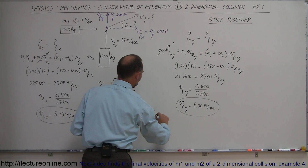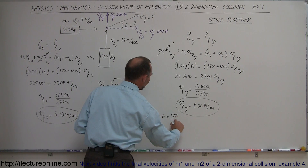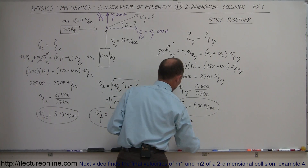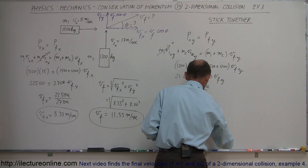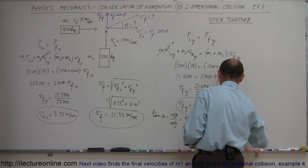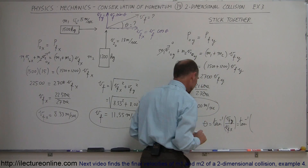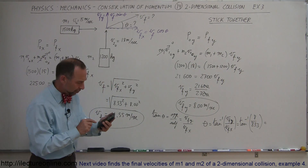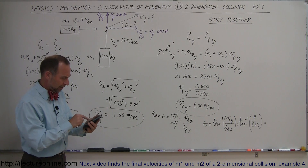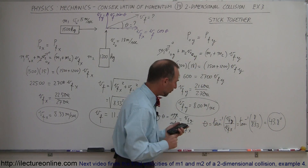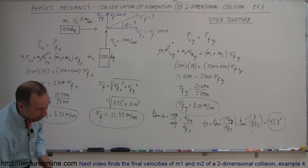Now we want to know the direction. The tangent of the angle equals the opposite side over the adjacent side, which is v_final_y divided by v_final_x. So the angle equals the arctangent of v_final_y over v_final_x, which is the arctangent of 8.00 divided by 8.33. That gives us 43.8 degrees, which is the angle with respect to the horizontal.